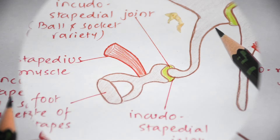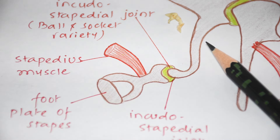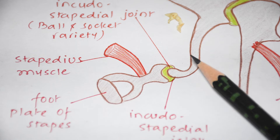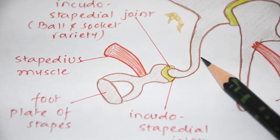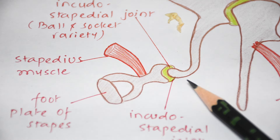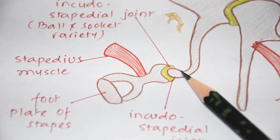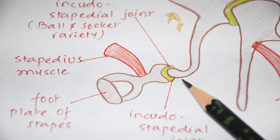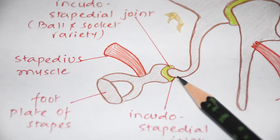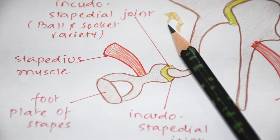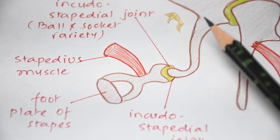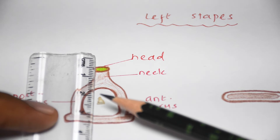The long process extends into the tympanic cavity behind and parallel to the upper part of the handle of malleus — these two run together and parallel. The tip of the long process turns medially and forms a knob-like lentiform nodule. This nodule articulates with the head of the stapes and together they form the incudostapedial joint, which is the smallest ball-and-socket variety of synovial joint in the body.